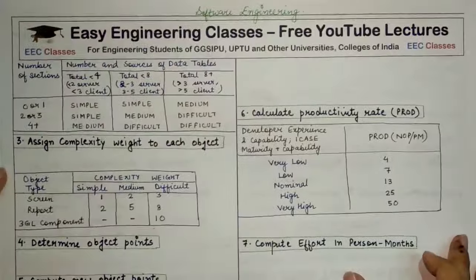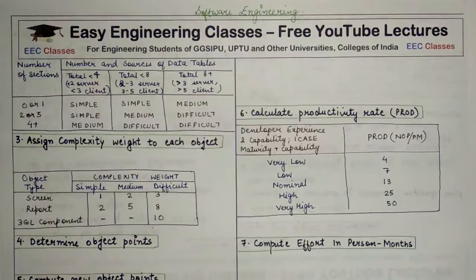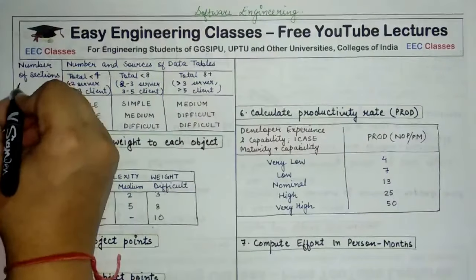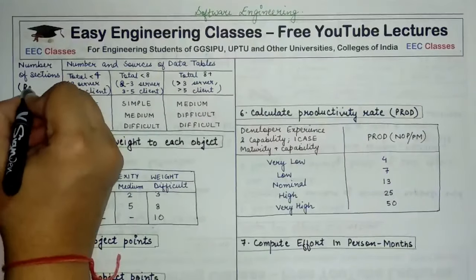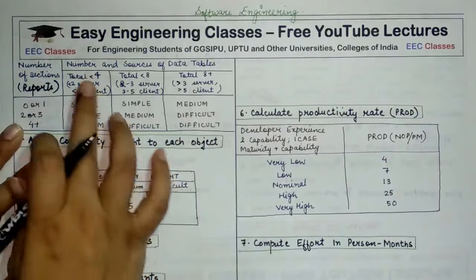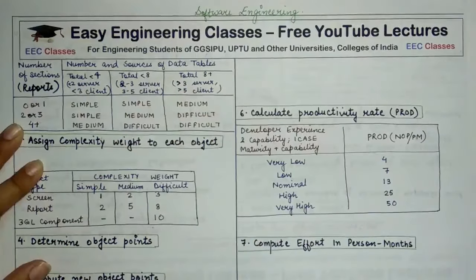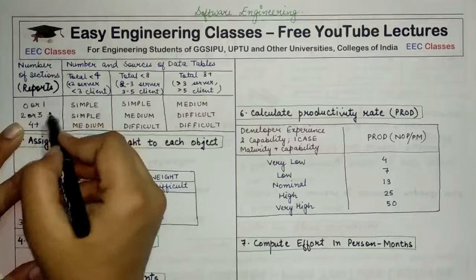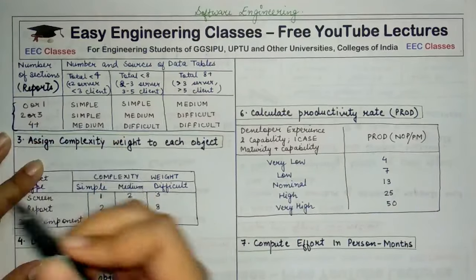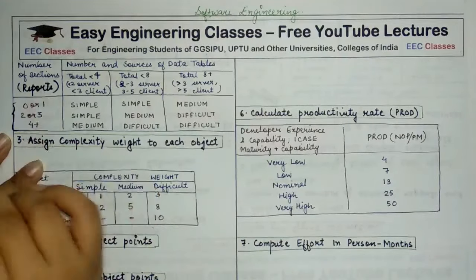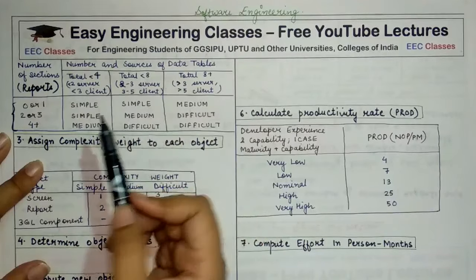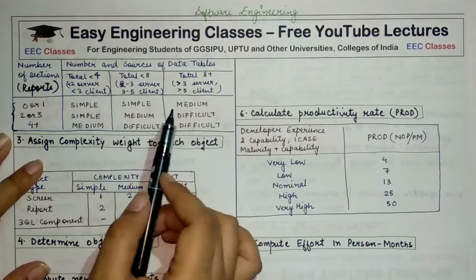Next comes the categorization for reports. The same logic applies for reports. The table for reports is structured similarly, with the only difference being the values and that instead of number of views, you consider the number of sections. The row and column intersection will pick the value or category for each report.